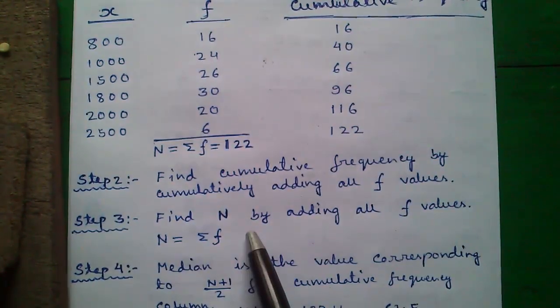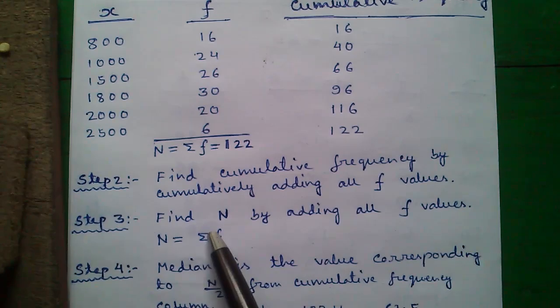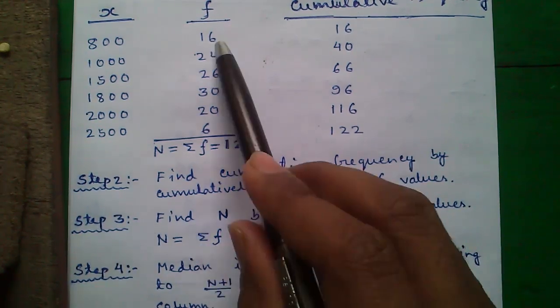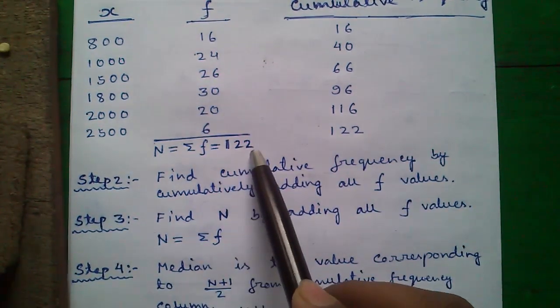Step 3. Find N by adding all F values. N is summation of F. This is the summation symbol. So sum all F values which is 122.